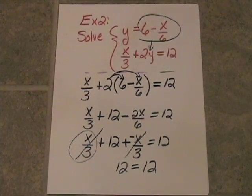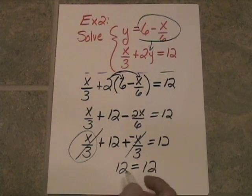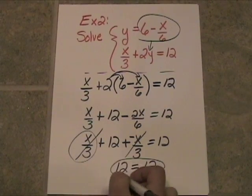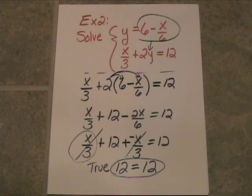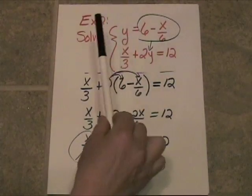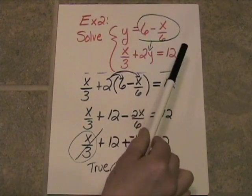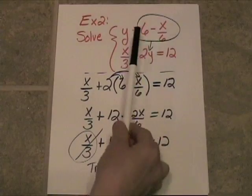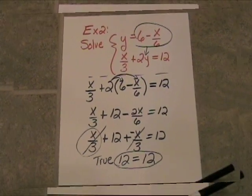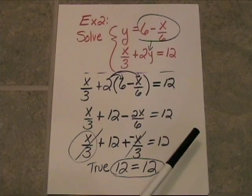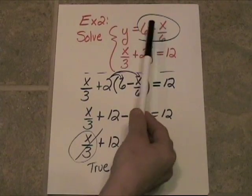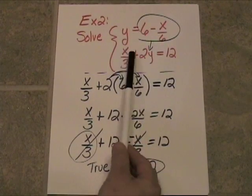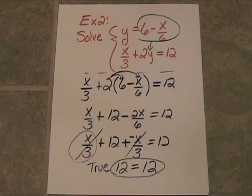That, again, is a special case. The variables have completely dropped out. But this time we are left with a true statement. This is true. So that means these two equations are describing the same line. They look different, but they are describing the same line. Every x and y that works in the first equation is also going to work in the second equation.